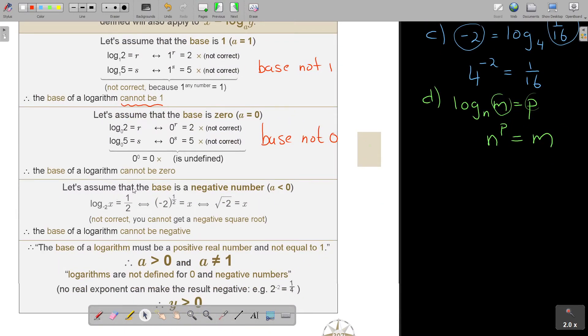Let's assume that the base is a negative number. Negative 2. So negative 2. Oh, what's going to happen? That will bring to a negative square root. It cannot. Base not negative. It cannot be negative.